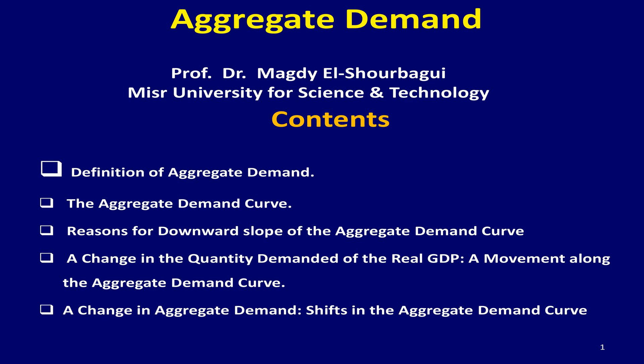Hi everyone, today I am going to talk about aggregate demand. My talk includes the definition of aggregate demand, the aggregate demand curve, reasons for downward slope of the aggregate demand curve, the change in the quantity demanded of real GDP, and the change in aggregate demand. By the end of this presentation, you will be able to differentiate between the change in the quantity demanded of real GDP and the change in aggregate demand.